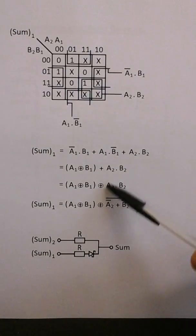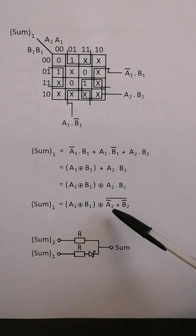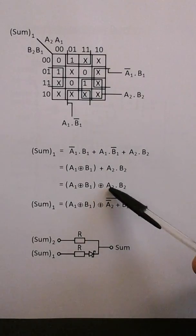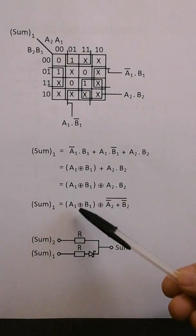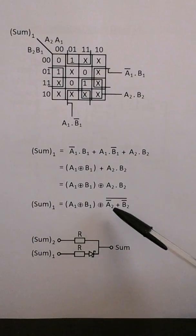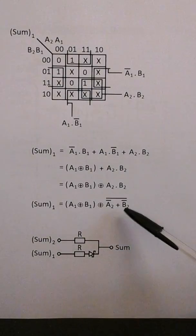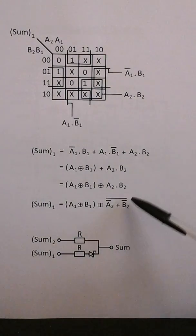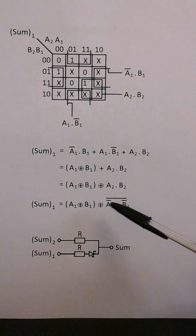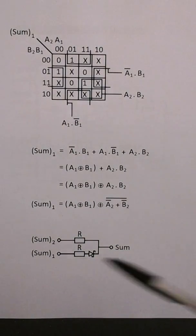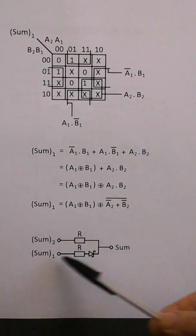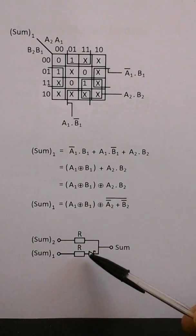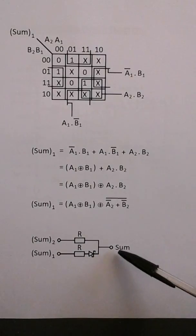I'm going to use De Morgan's theorem to change this AND into a NOR, so that becomes: (a1 XOR b1) XOR (NOT a2 NOR NOT b2). I'm doing that so I can use six inverters to implement these expressions. Sum2 feeds here and sum1 feeds there, with a Schottky diode in series with that resistor, giving the sum1 output.